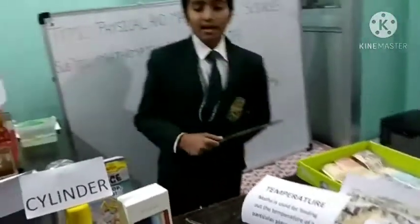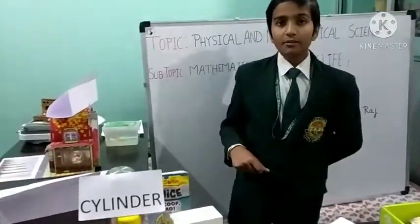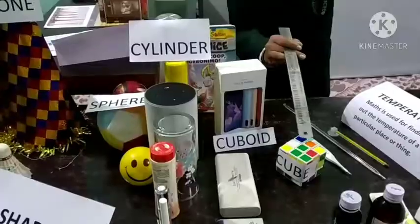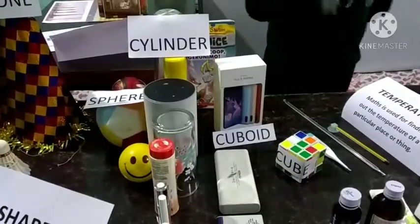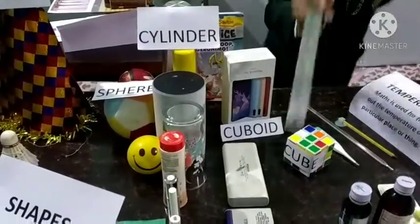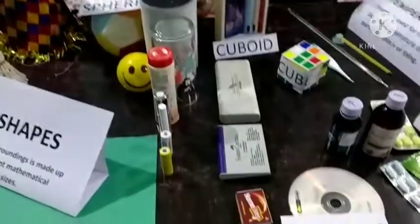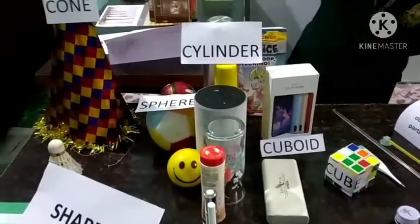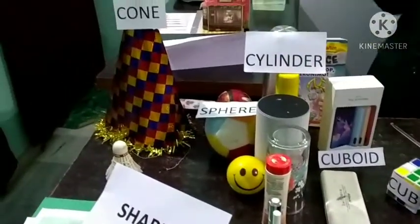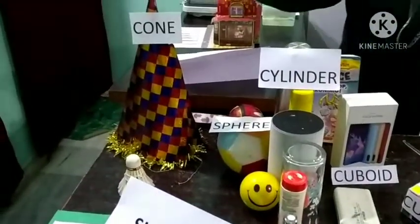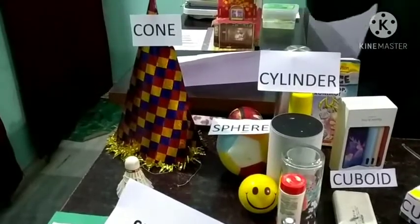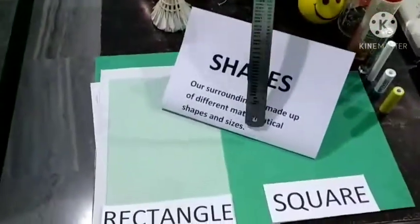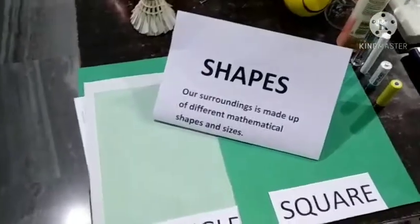Friends, our whole world is surrounded with mathematical shapes. A Rubik's cube is an example of a cube, a CD is an example of a circle, a book is an example of a cuboid, a glass is an example of a cylinder, a butter cap is an example of a cone, and square paper is an example of a square.